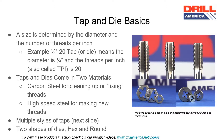Taps and dies typically come in two materials. The material determines what application the tap or die will work for. Carbon steel is used for cleaning up or fixing threads. High speed steel is used for making new threads.